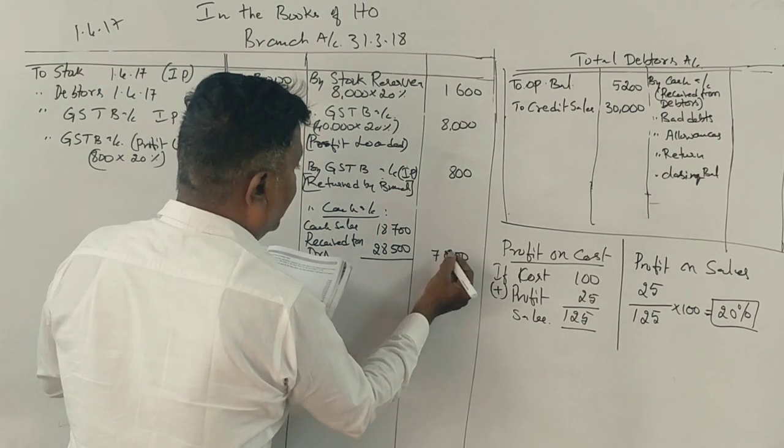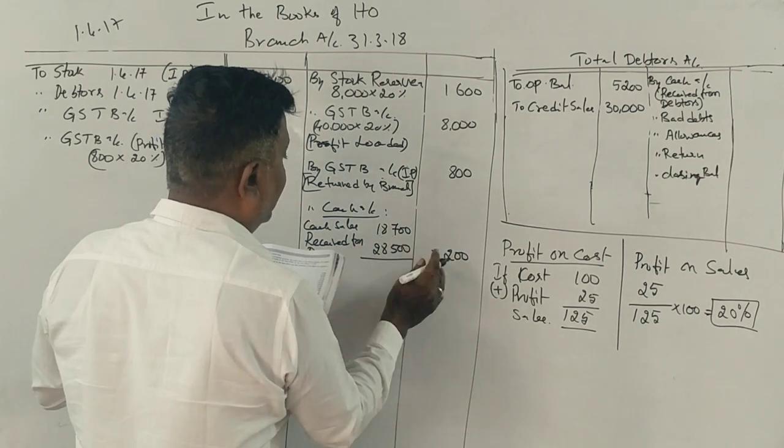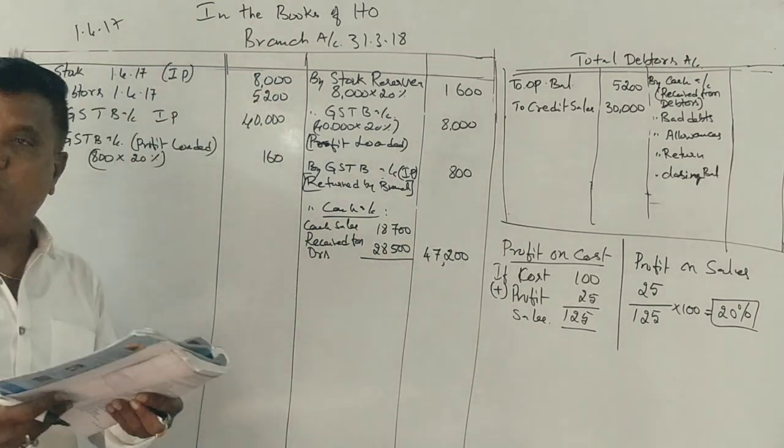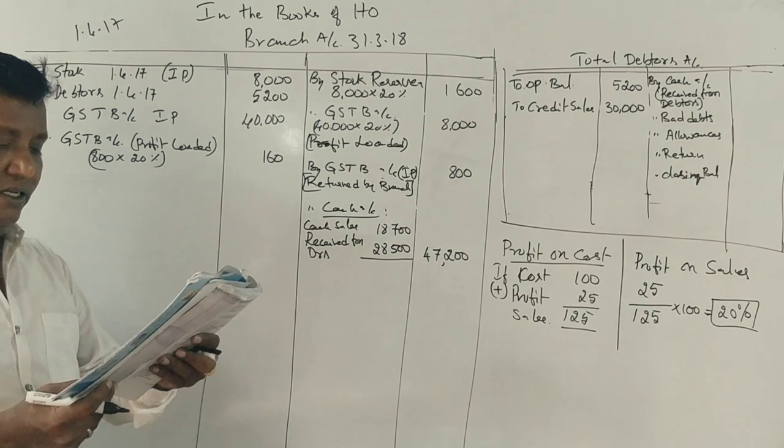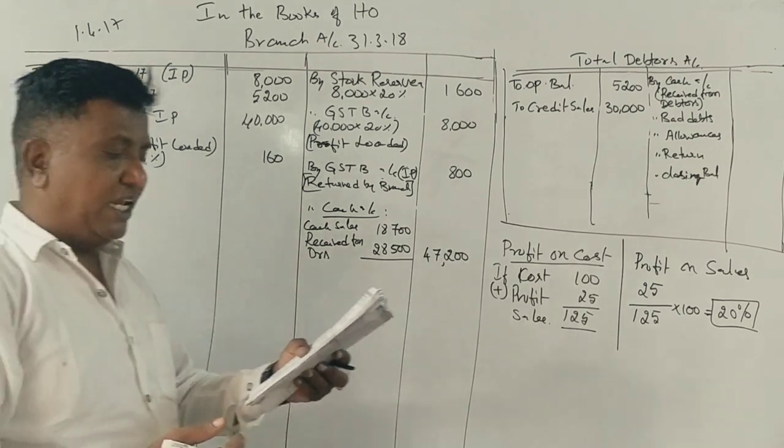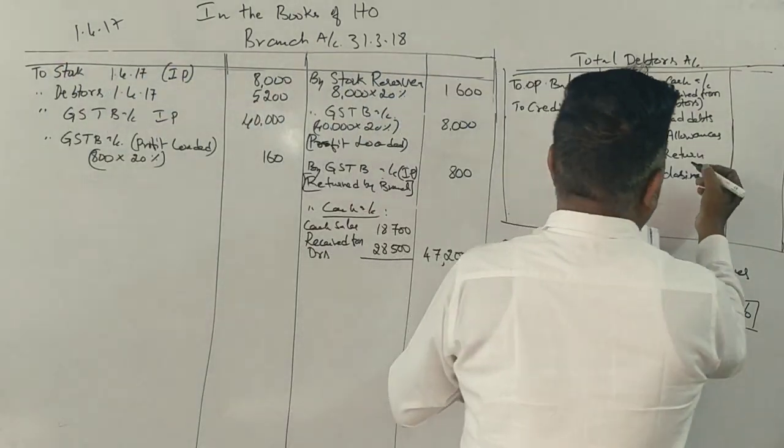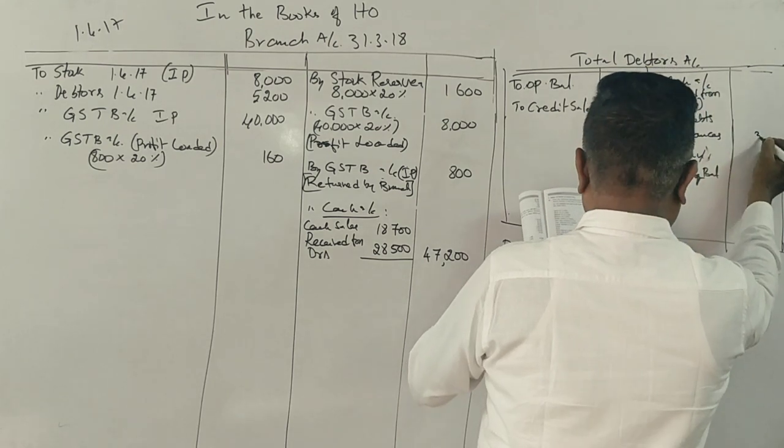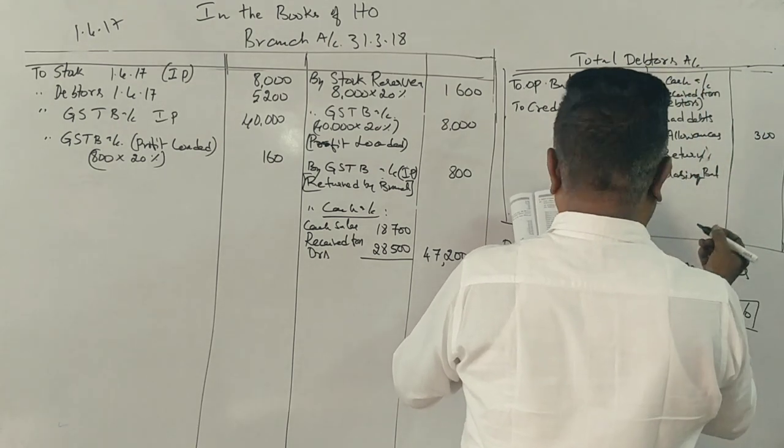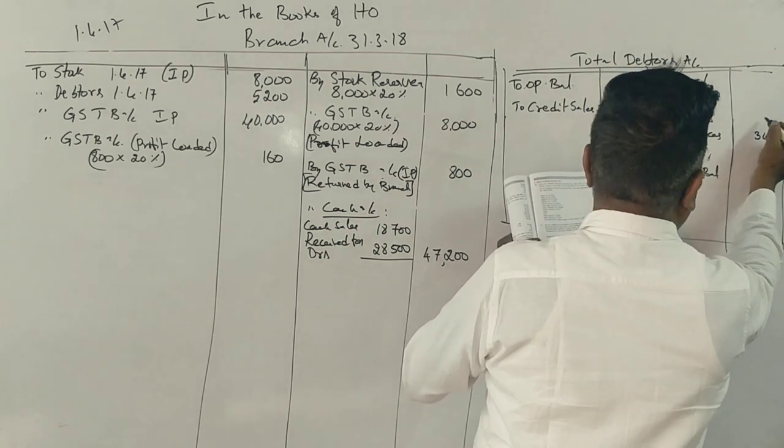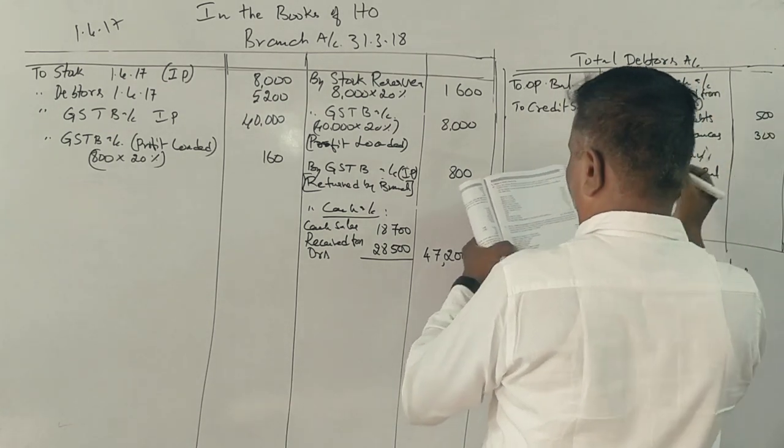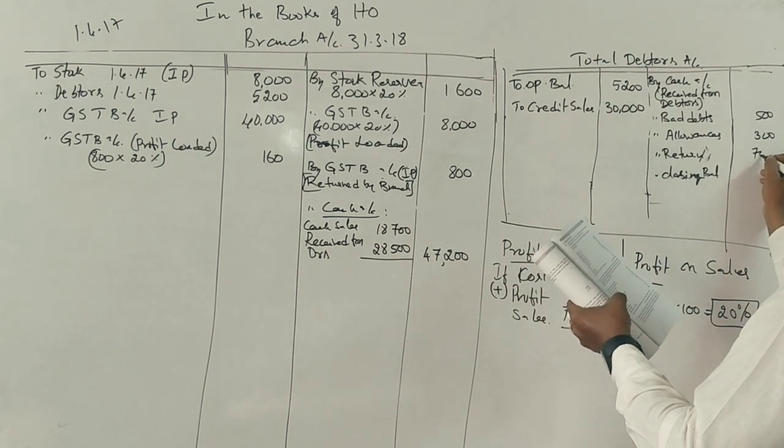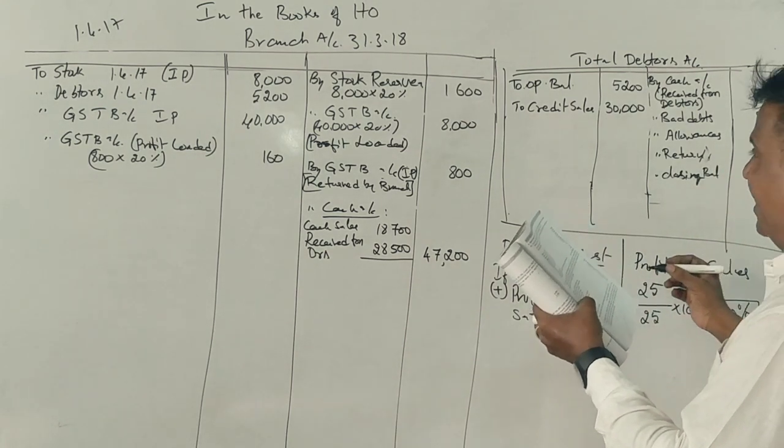Discount allowed to customers is 300. Bad debts are 500. Returns from customers are 700.